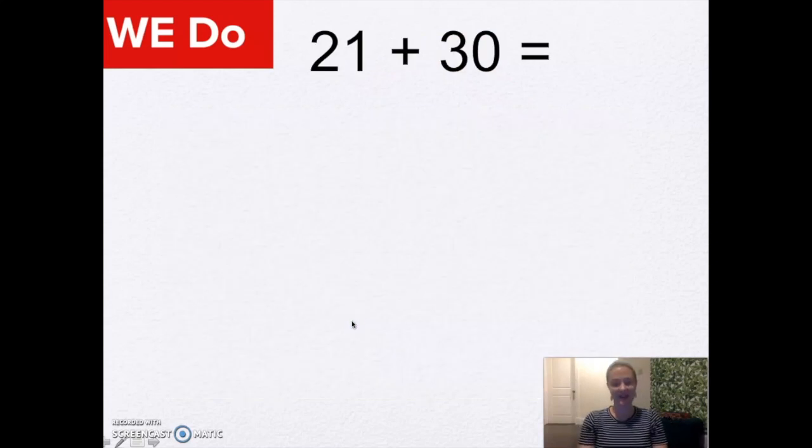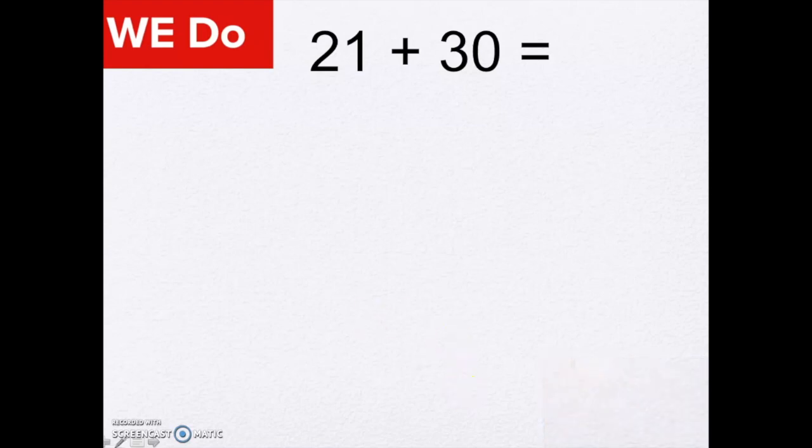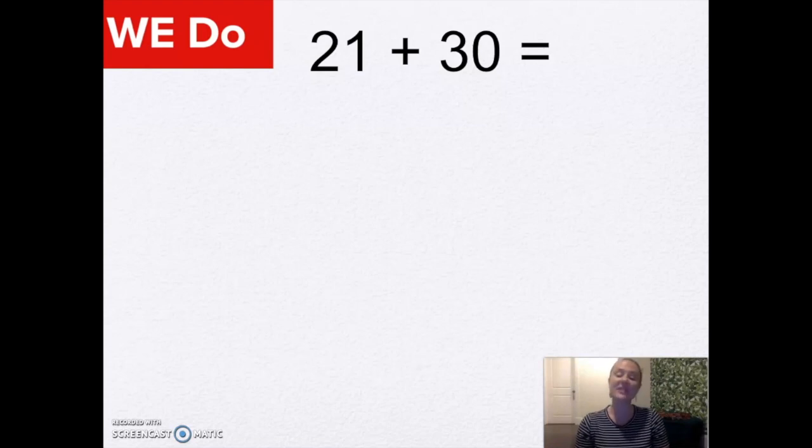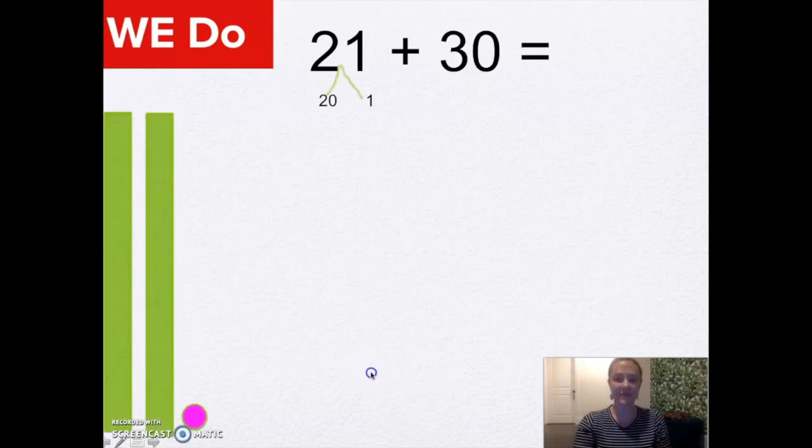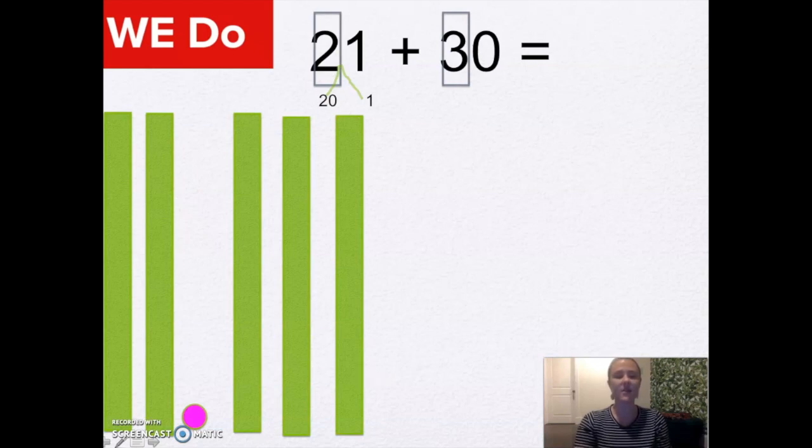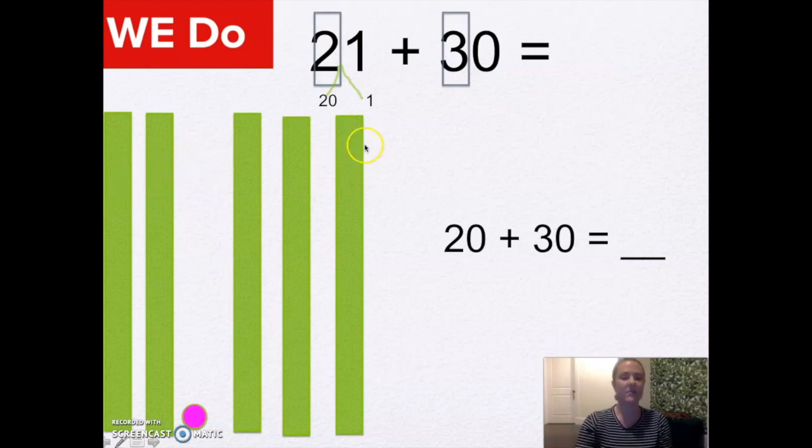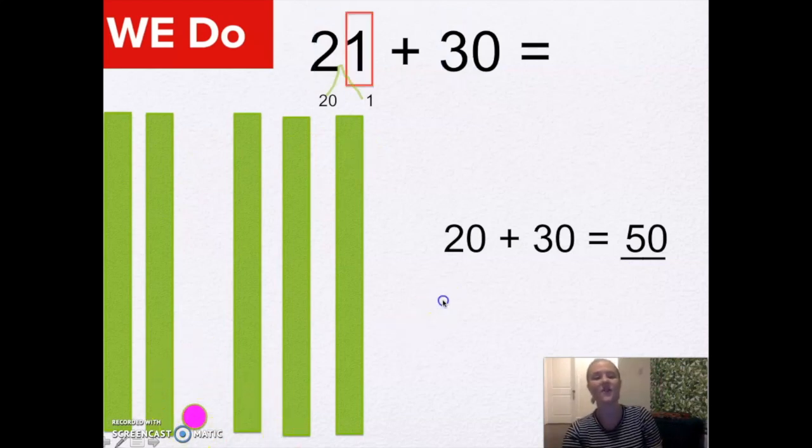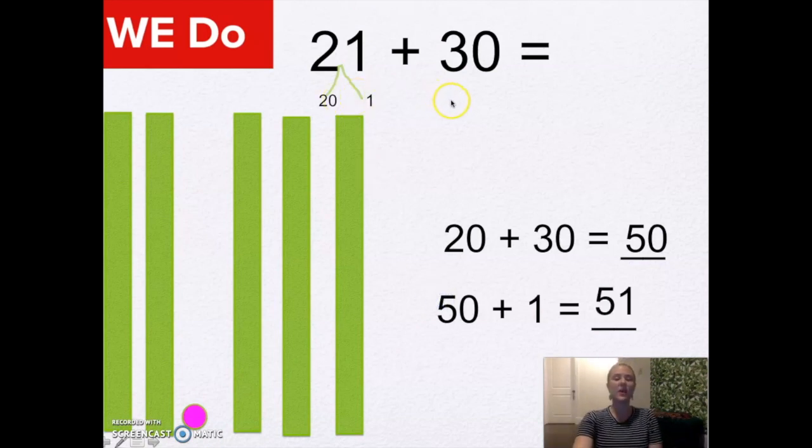Now, let's solve 21 plus 30. Here we go, mathematicians! Okay, friends, if you need more time, pause your video. If not, let's compare answers. Okay, I have 21, and I'm adding 3 more tens. So let me see how many tens I have in all. 20 plus 30 makes 50. Don't forget about that extra one over here. So 50 and 1 make 51. So 21 and 30 make 51. Fantastic! Take a picture of your work. Say, I'm doing great work.